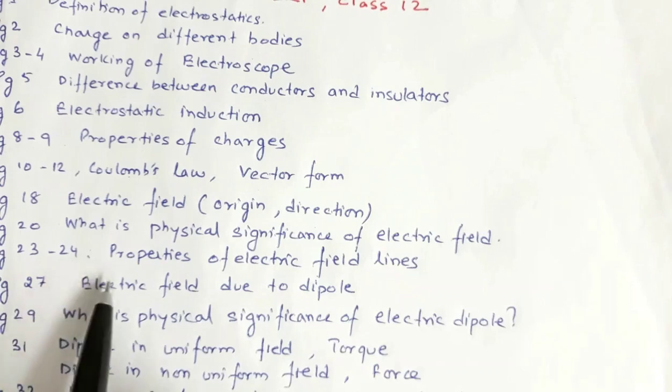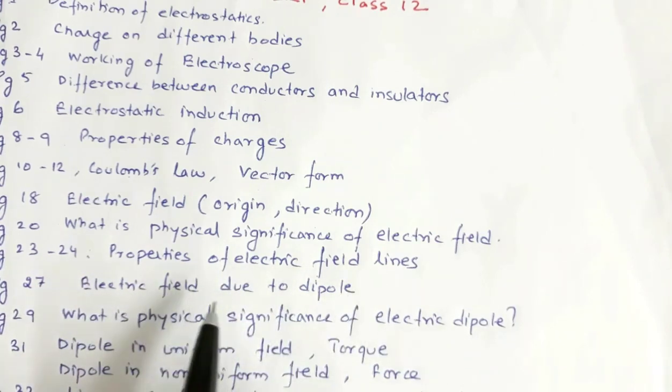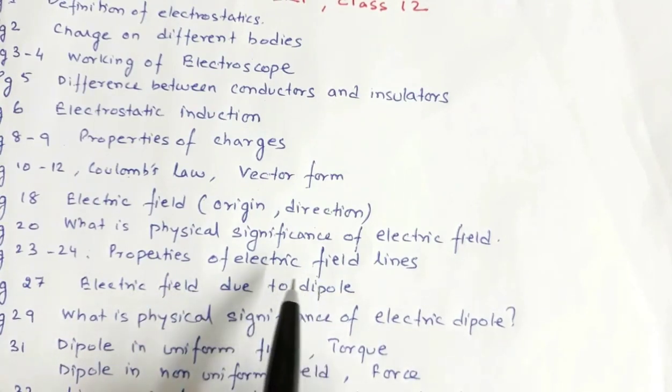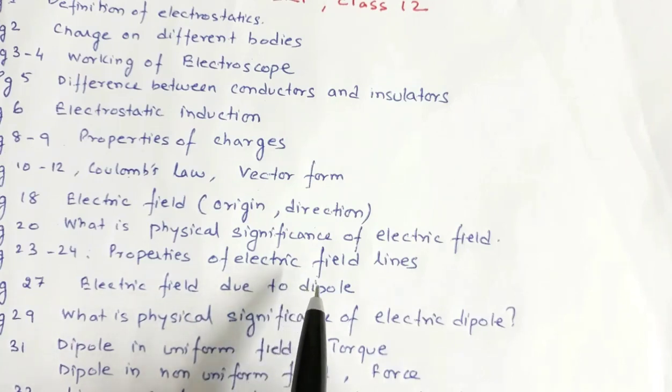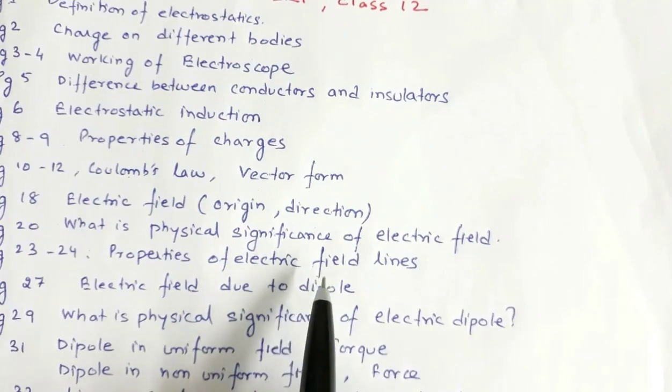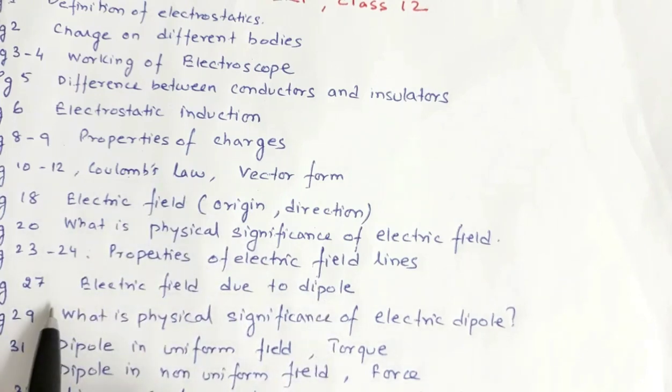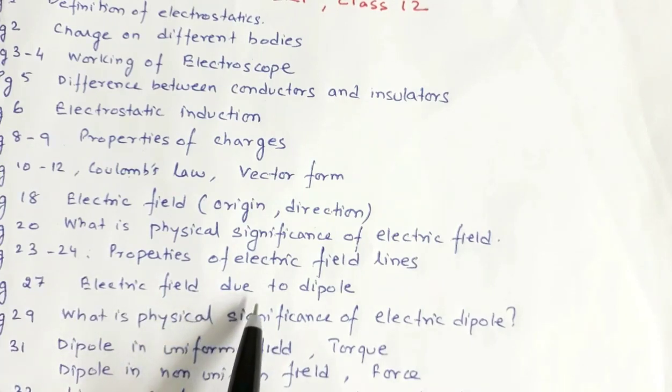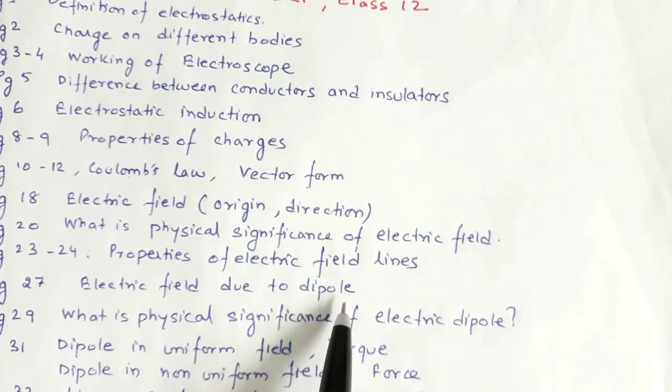Page 23 and 24 is the properties of electric field lines. Also, you can read about electric line of force. The electric field is due to dipole. In the last question, you have to look at the paper. The electric field due to dipole on the axial line, the equatorial line.